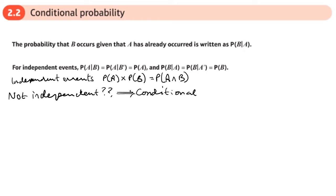An example of something independent would be: you take a card out of a pack, record its value, and put it back — so it's always out of 52. A conditional probability example would be: you take a card out of a pack and don't return it. The probabilities change depending on the card you've taken out. So if you take a heart out, that affects the probability of picking another heart or any other card, and picking a spade affects it differently. Conditional probability is where things are dependent.